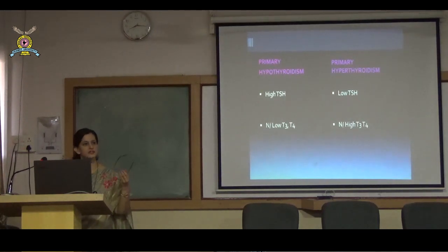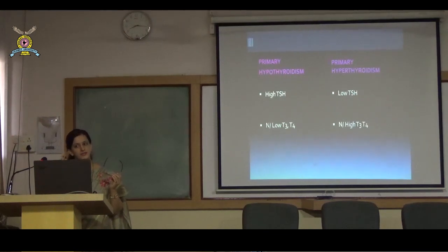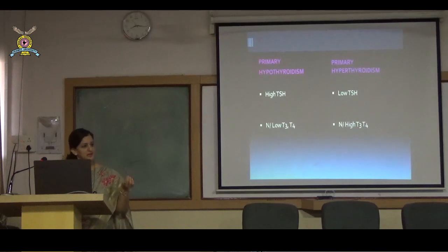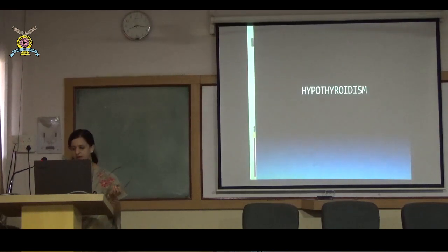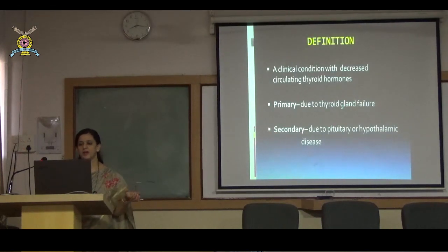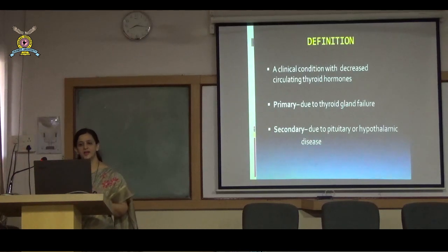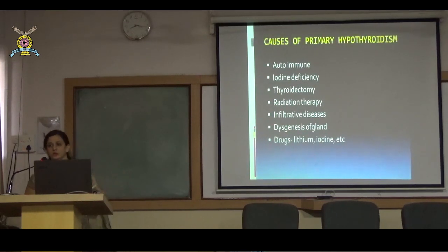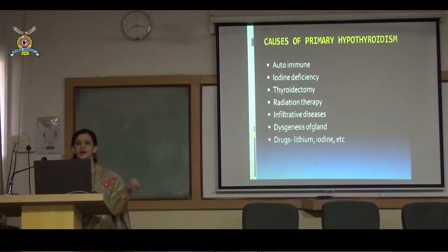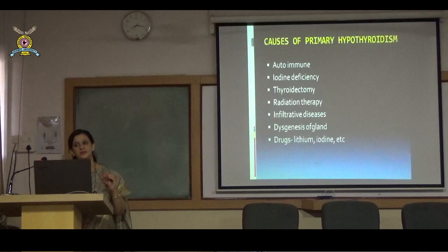Today we will concentrate on primary hypothyroidism, as pituitary diseases are uncommon and usually referred to endocrinologists. We never do T3/T4 alone — we always do TSH, T3, and T4 together. The most important causes of primary hypothyroidism are: autoimmune disease (most common), iodine deficiency (common in hilly/mountainous areas), thyroidectomy, and radiation therapy. Other causes include infiltrative diseases like sarcoidosis and TB, congenital absence of the gland, and drugs such as lithium, iodine, amiodarone, and antithyroid drugs.